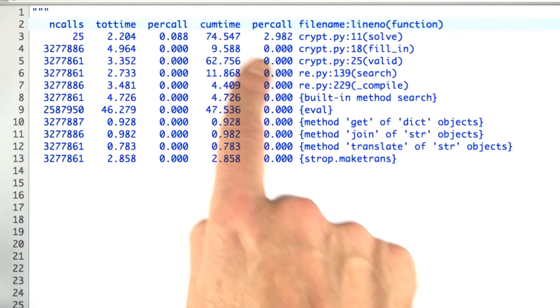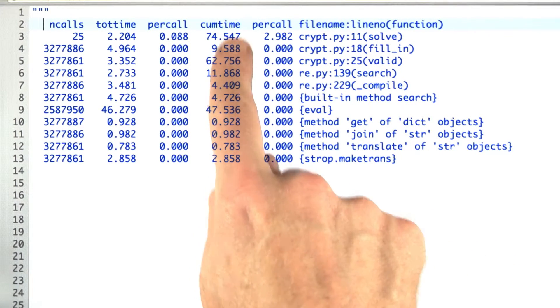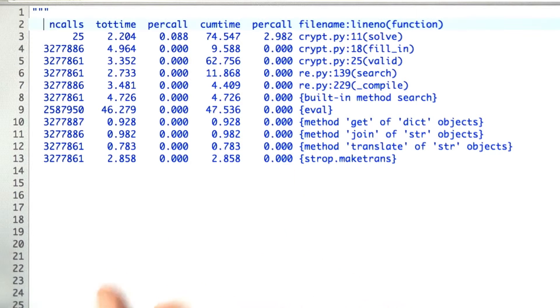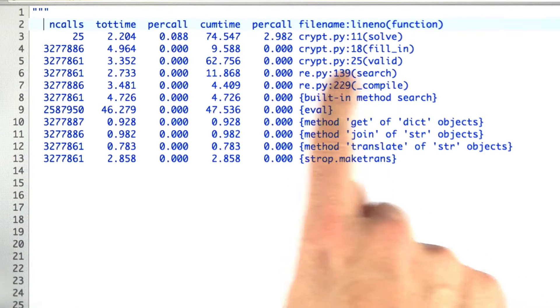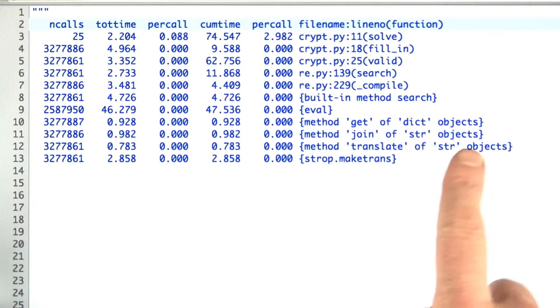and within that 62.7 seconds went to valid, so that's where most of the time is going. I should say that most of these results are pretty much what I was expecting. I was a little bit surprised that the RE search took so much time, 12 seconds out of the 75, and I was also a little bit surprised that this makeTrans and these other methods, the translate methods, took so little time, just about three seconds altogether.